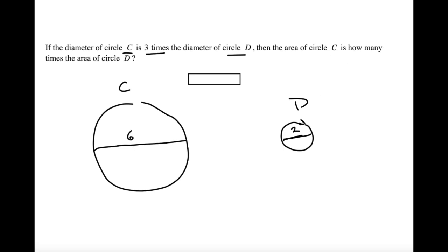Okay, so what's the area of circle D? After all, that's what we're interested in. Well, the area formula, in case you don't know it, is pi r squared, pi times the radius squared. The radius of circle D is half of the diameter, so one, so pi times one squared or one pi.